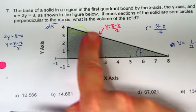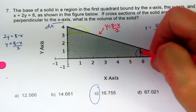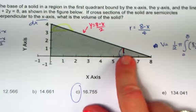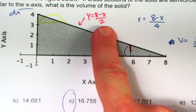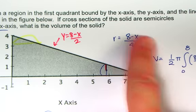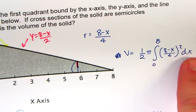So to get this radius here that goes into your formula, you have to, in fact, divide that by 2. And so that's why it's 8 minus x over 4. And so this is your setup, and then that turns out to be c.